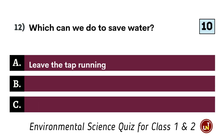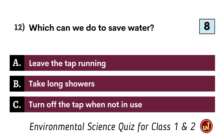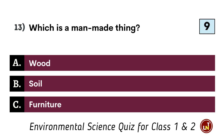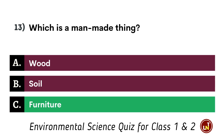Which can we do to save water? Turn off the tap when not in use. Which is a man-made thing? Furniture.